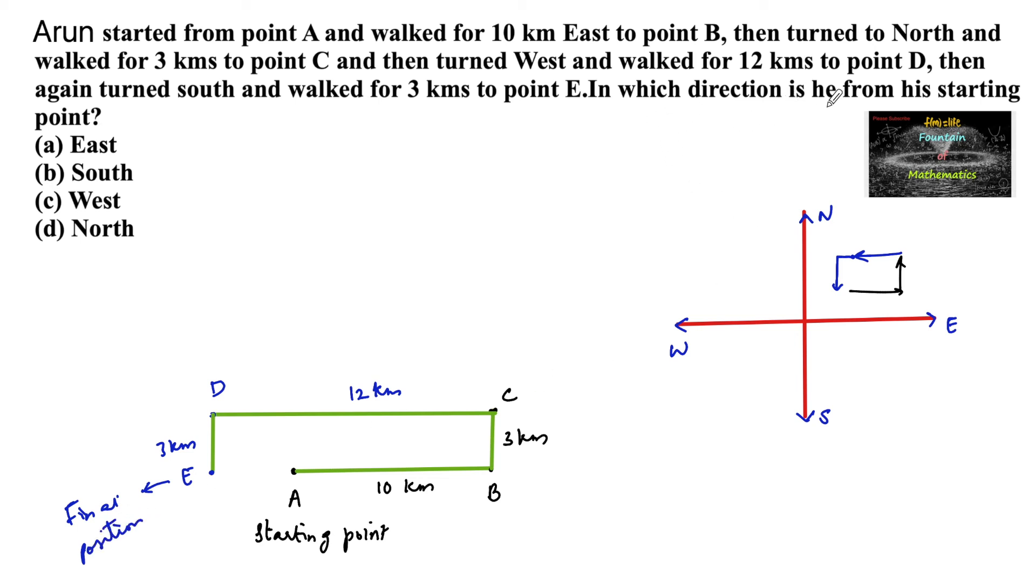In which direction is he from his starting point? So here is the starting point and here is the final position. We can see both are on the same line. At a distance of here 10, here 12 km, means 2 km difference. Let us consider A is here and E is on the west direction. On the same path, same line we can see. So position E is in the west direction. So we can go with option C, west.